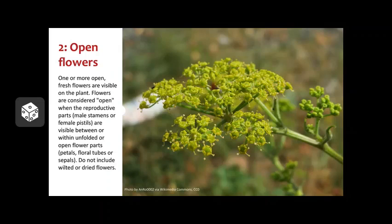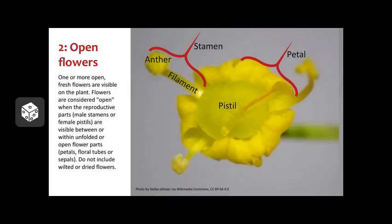Of course, do not include wilted or dried flowers. Based on this definition, in the image on the right, we have a plant that is in both flower phenophases. An important part of this definition is that this phenophase only begins once reproductive parts — male stamens or female pistils — are visible between or within unfolded or open flower parts. Make sure to familiarize yourself with what these flower parts look like and how to tell if the reproductive parts are visible.